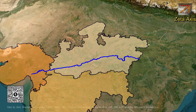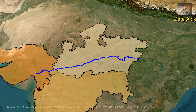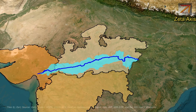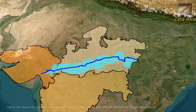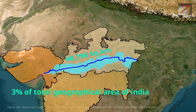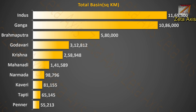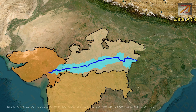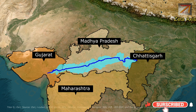Because the Narmada flows through a rift valley, there are not many large tributaries, so even though it flows for a very long length, it has a relatively smaller river basin. The Narmada river basin covers an area of 98,796 km², which is nearly 3% of the total geographical area of India. It is the seventh largest river basin of all rivers in India, covering mainly Madhya Pradesh and Gujarat, with small parts of Chhattisgarh and Maharashtra.